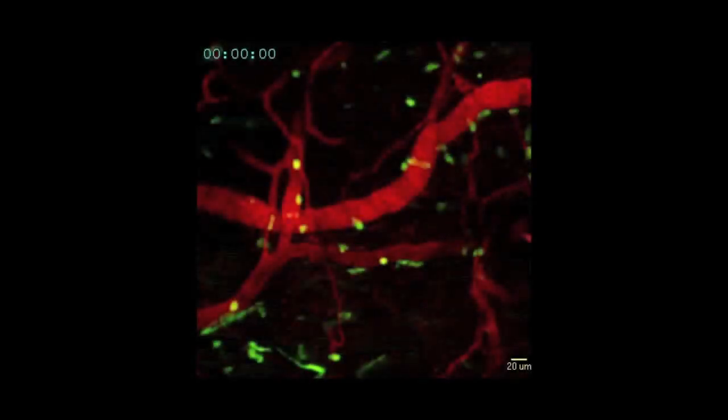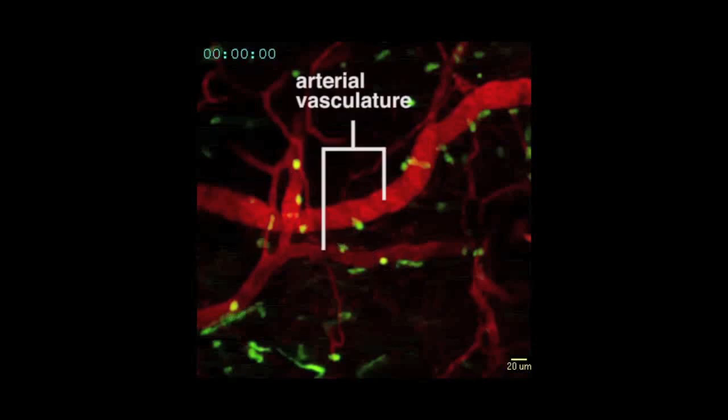In this time-lapse video, created with intravital two-photon microscopy, monocytes labeled with a green fluorescent protein can be observed within the arterial vasculature, which appears in red.